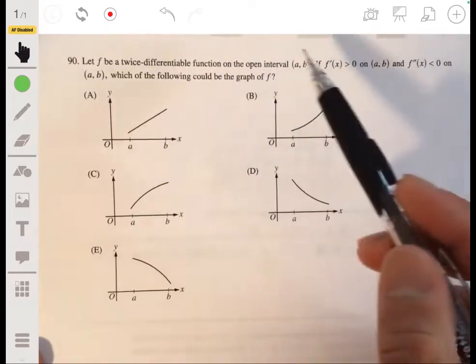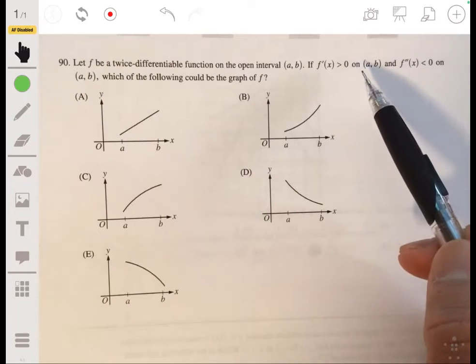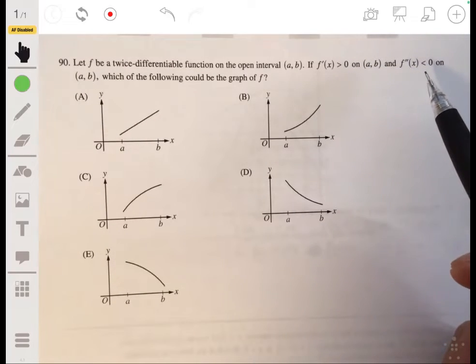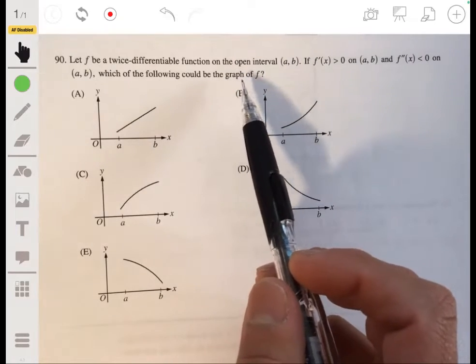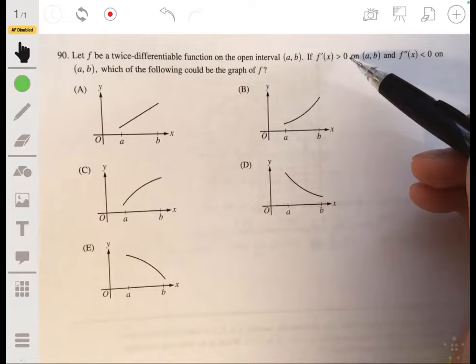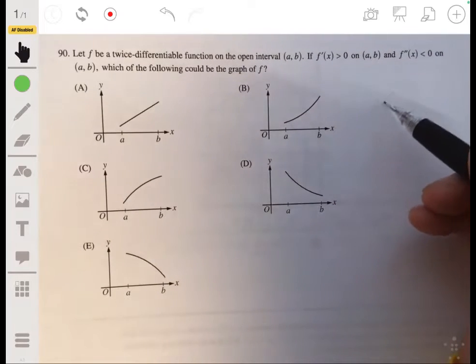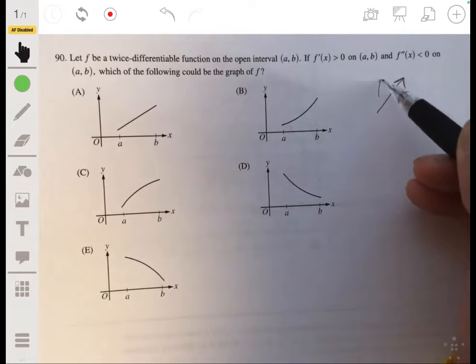Ninety, let f be a twice differentiable function on the open interval a to b. If f prime of x is greater than zero on a to b and f double prime of x is less than zero on a to b, which of the following could be the graph of f? So if f prime of x is positive, then we know that the graph is increasing.